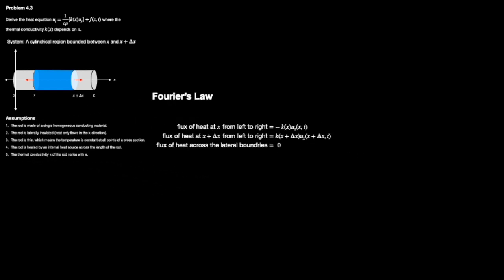Now we're going to apply Fourier's law to the system. The only real change here is that, since the conductivity depends on x, instead of having a constant k, now we have a function of k. We need to make sure that the conductivity is applied at the point where we're looking at the flux. So we have k of x times u sub x at x, and similarly, we have k of x plus delta x times u sub x at x plus delta x.